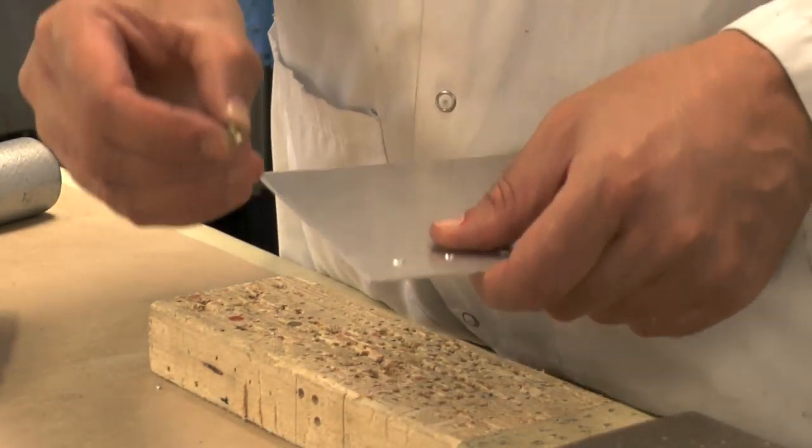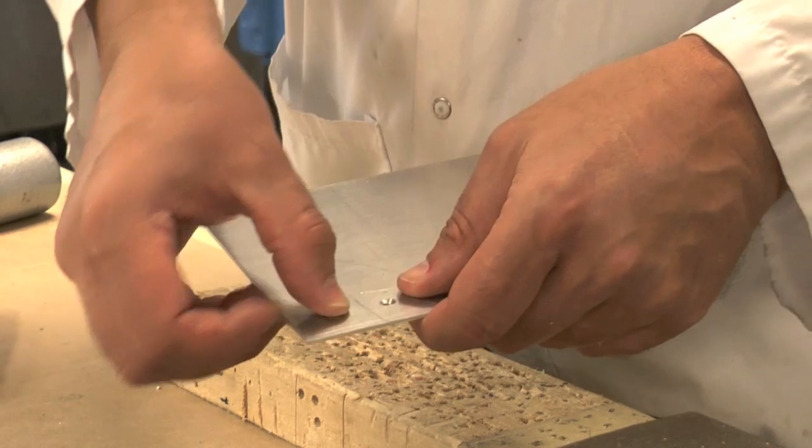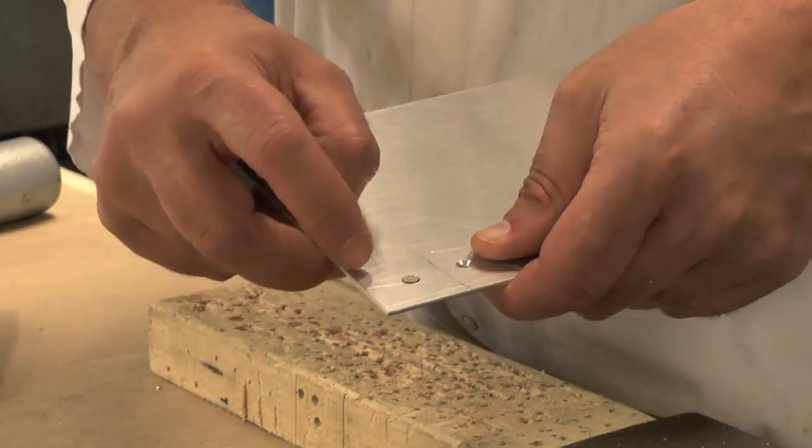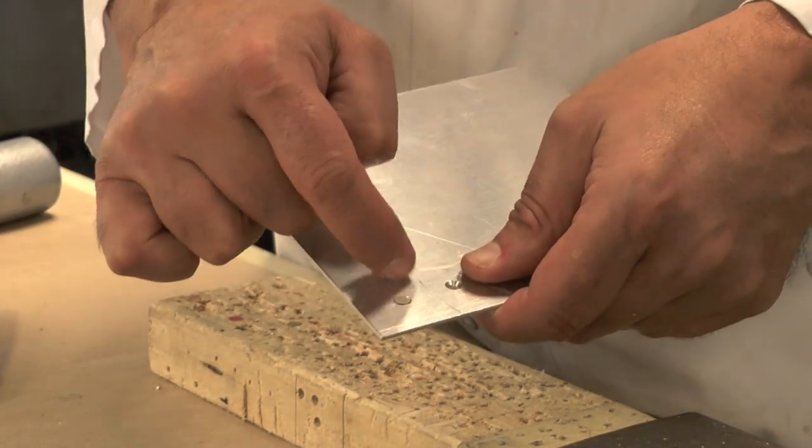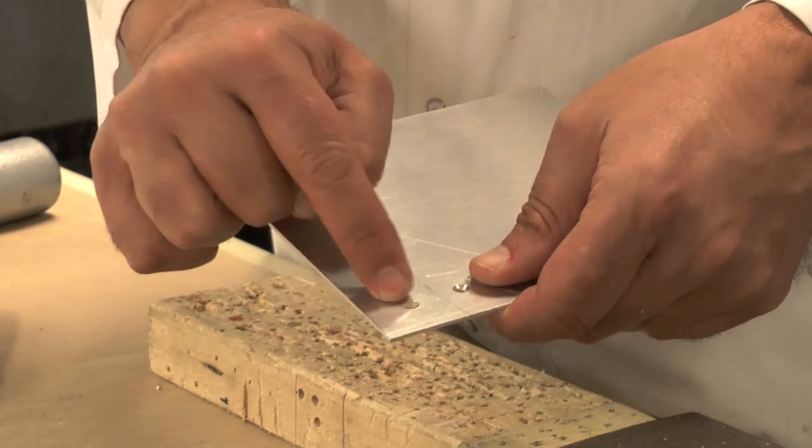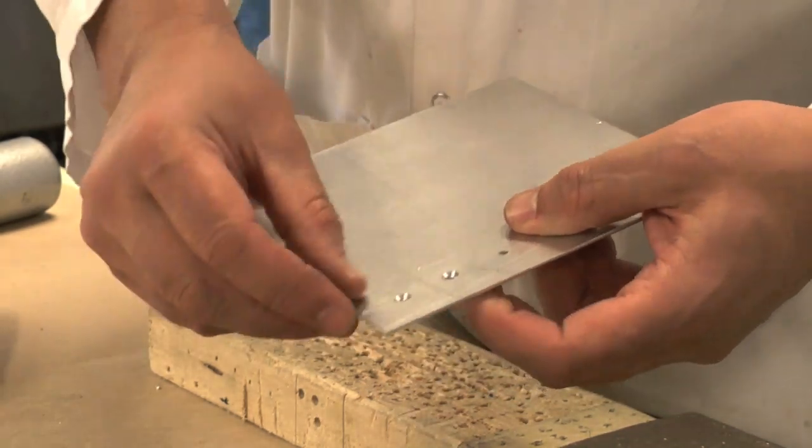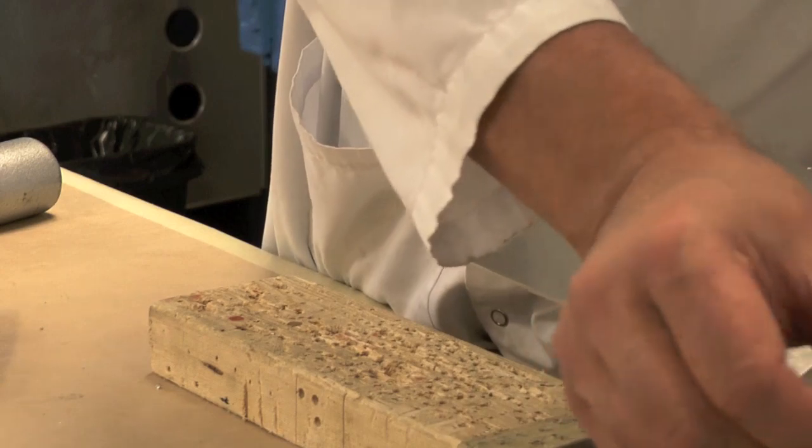Check the depth of countersinks by dropping a rivet into the hole and inspect for excess head protrusion. A properly countersunk rivet should show a small silver ring around the head of the rivet.